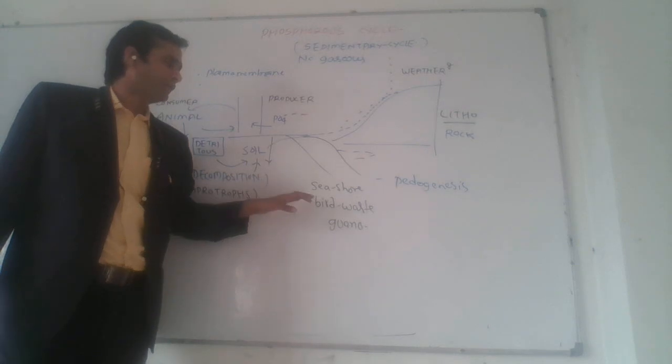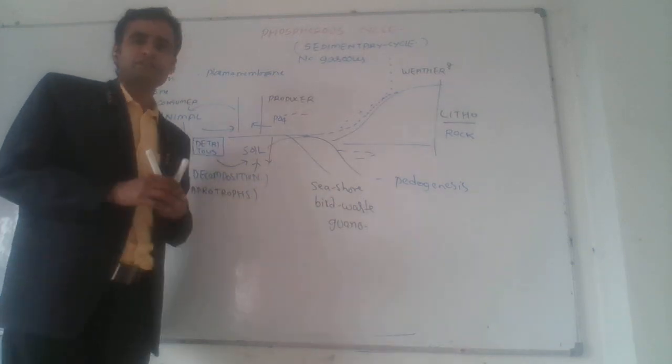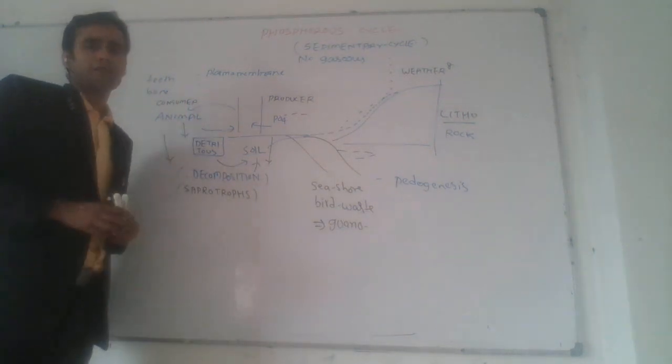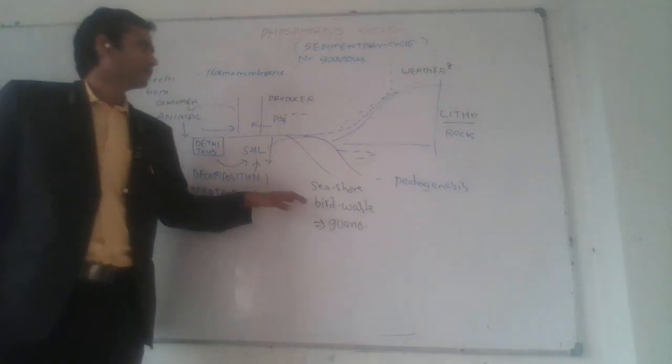In the soil, bird waste contains phosphorus. It is known as guano (G-U-A-N-O), which is the waste material of birds.